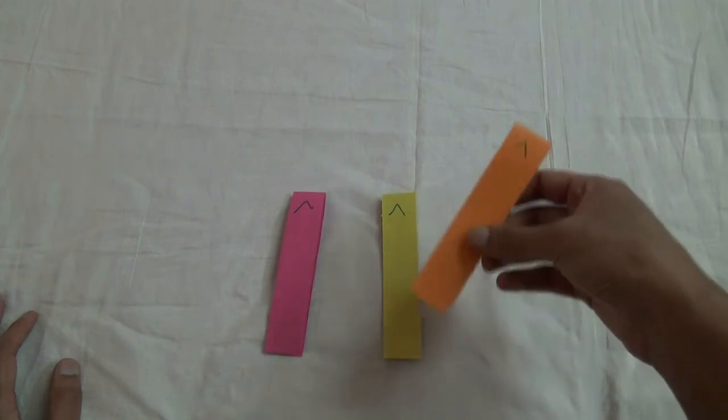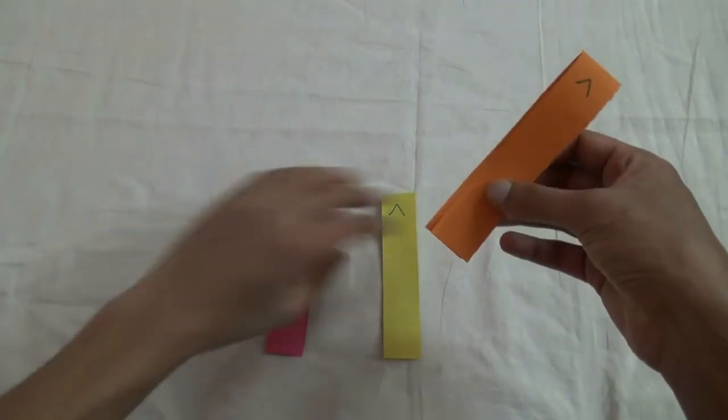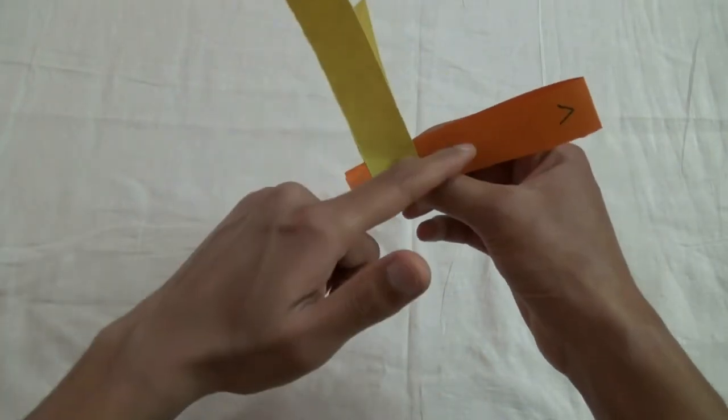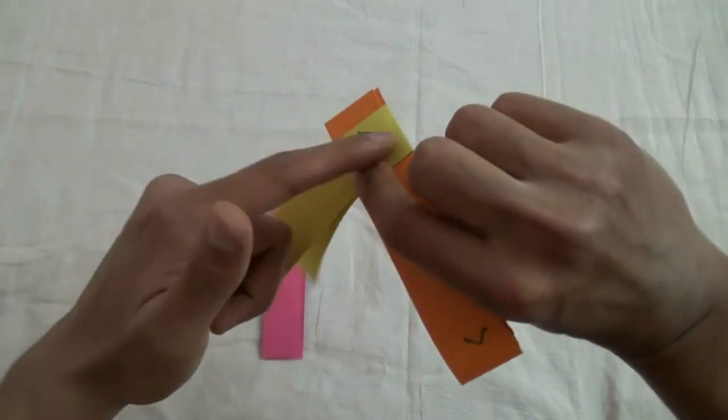In this step, take the free end of the orange strip and put it inside the folded end of the yellow strip like this.